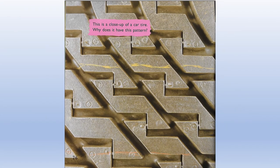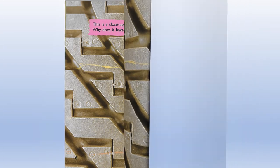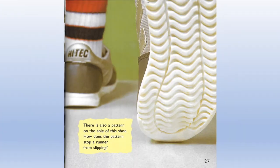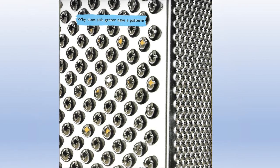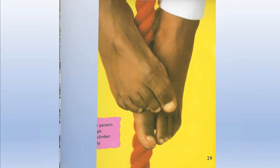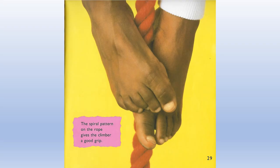This is a close-up of a car tire. Why does it have this pattern? There is also a pattern on the sole of this shoe. How does the pattern stop a runner from slipping? Why does this grader have a pattern? The spiral pattern on the rope gives the climber a good grip.